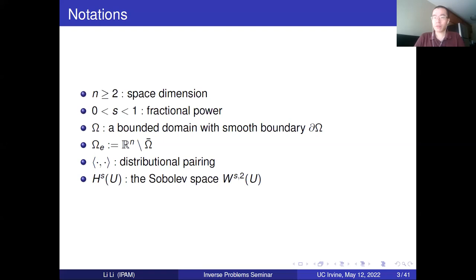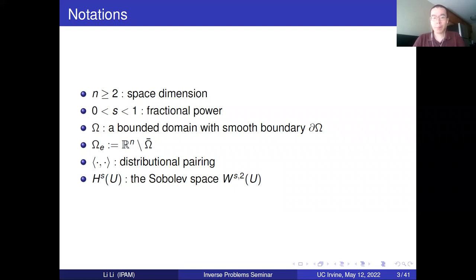First I will fix some notations. N is the space dimension, S is the fractional power, and omega is always a bounded domain with smooth boundary partial omega. Omega_e is the exterior of omega. The angle bracket is the standard distributional pairing. H^s u is the standard L2-based Sobolev space W^{s,2}.